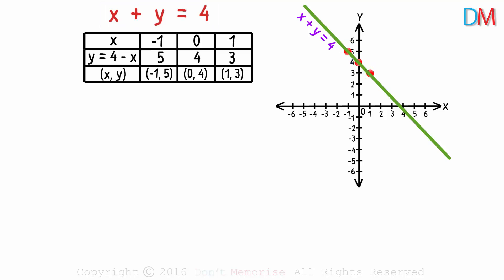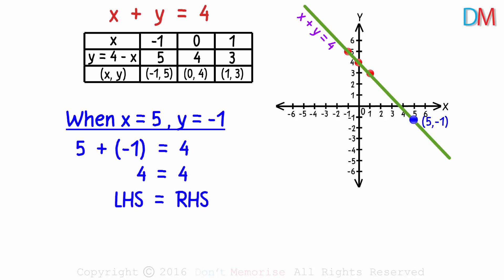So let's take another random point. Say this one. It's 5 comma negative 1. When x is 5 and y is negative 1, we see that the equation is satisfied. 5 plus negative 1 is 4. So whichever point you take on this line, it will be a solution to this linear equation.